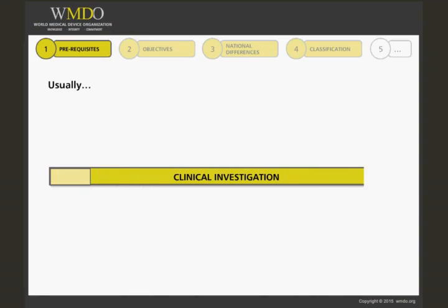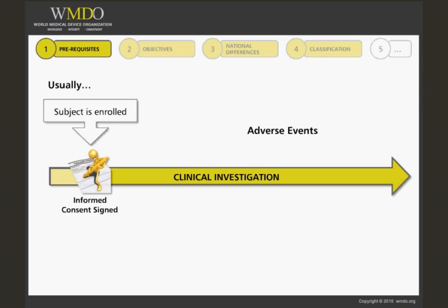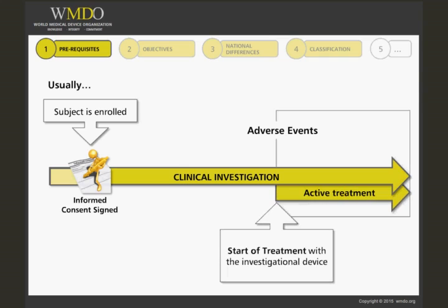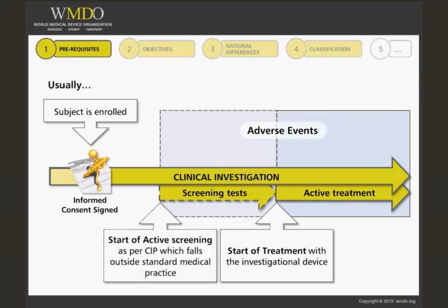Before we can speak about an adverse event to a subject during a clinical investigation, two prerequisites need to be fulfilled. The subject needs to be enrolled in the clinical investigation, which involves signature of the informed consent at the very least, and two, either the device has been used on the subject or he or she has undergone active eligibility screening as per the clinical investigation plan.